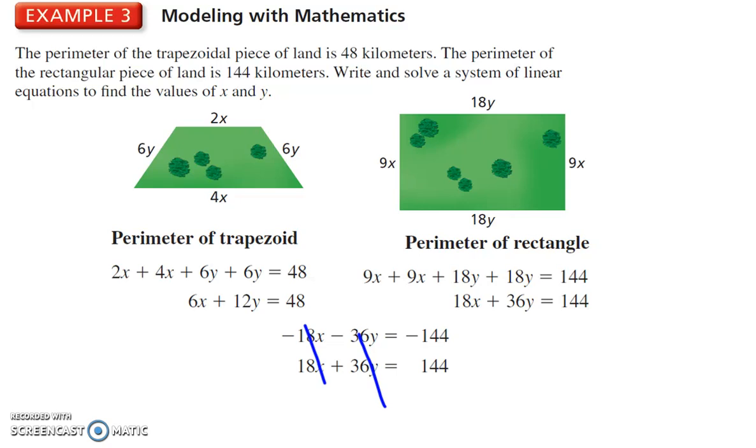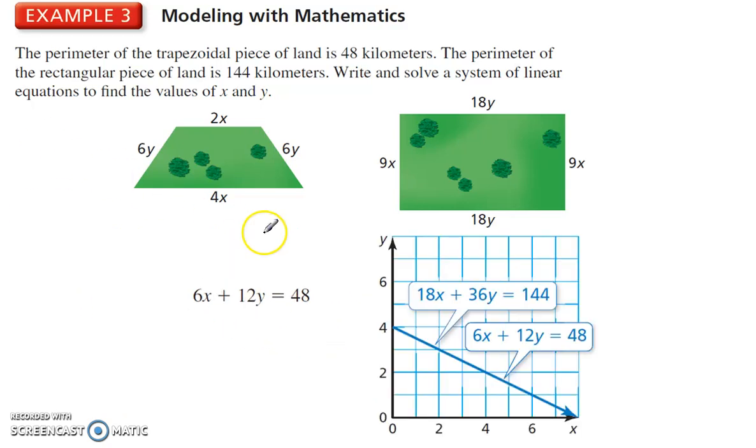Which means again, these two equations are the same line. That means I can plug in any of the coordinates on this line, like 2 for x and 3 for y, or 4 for x and 2 for y, into this, and it will always be true.